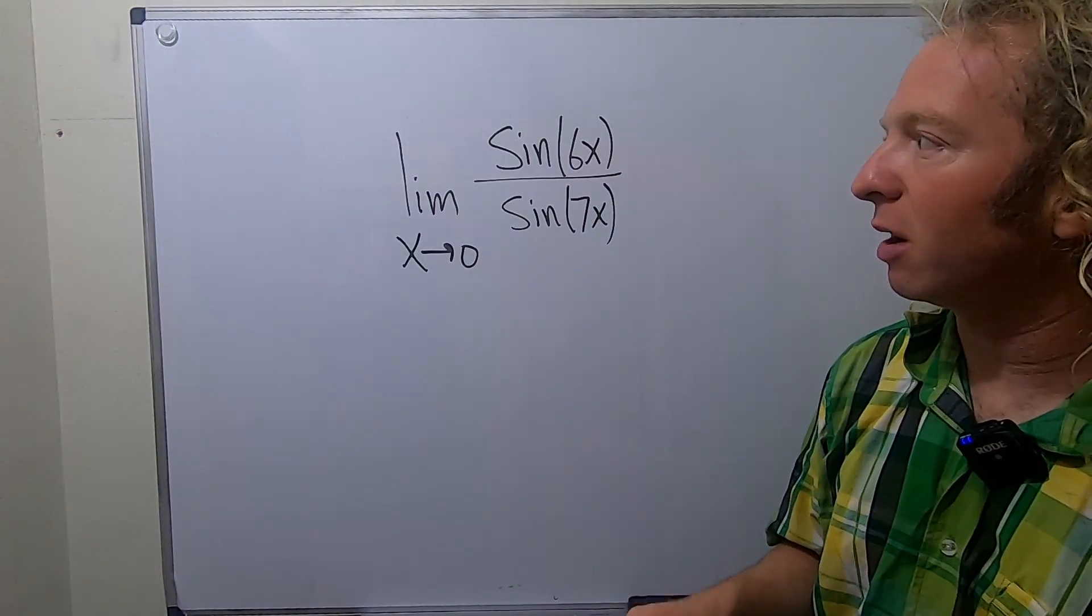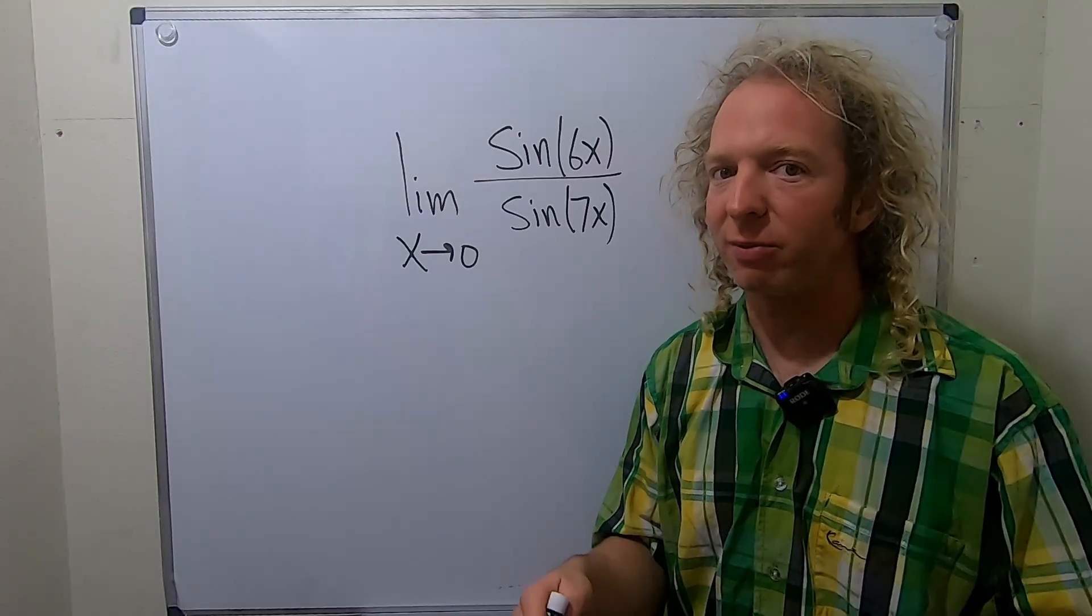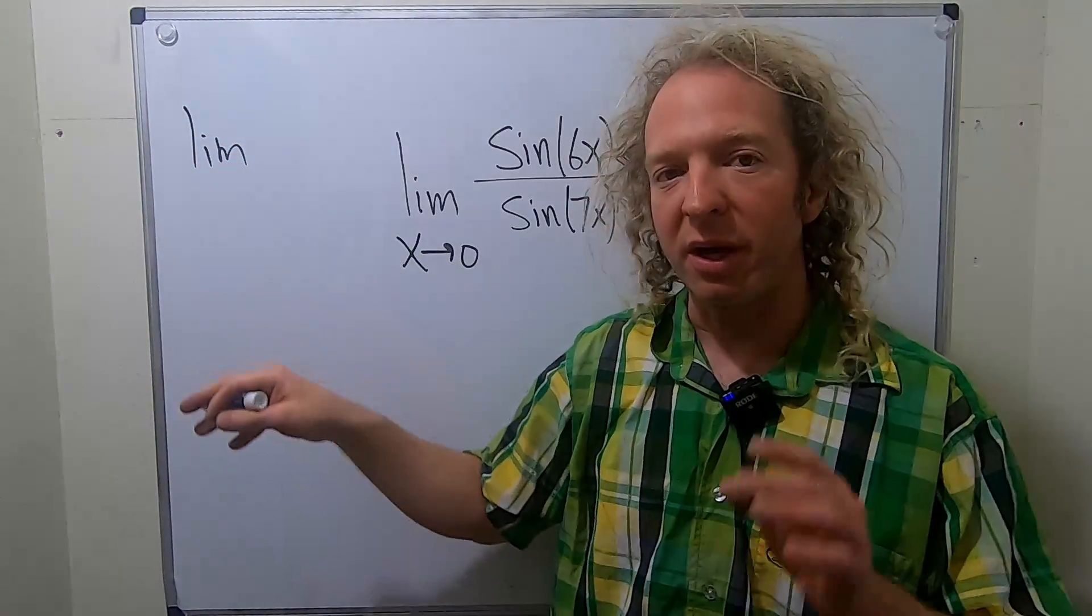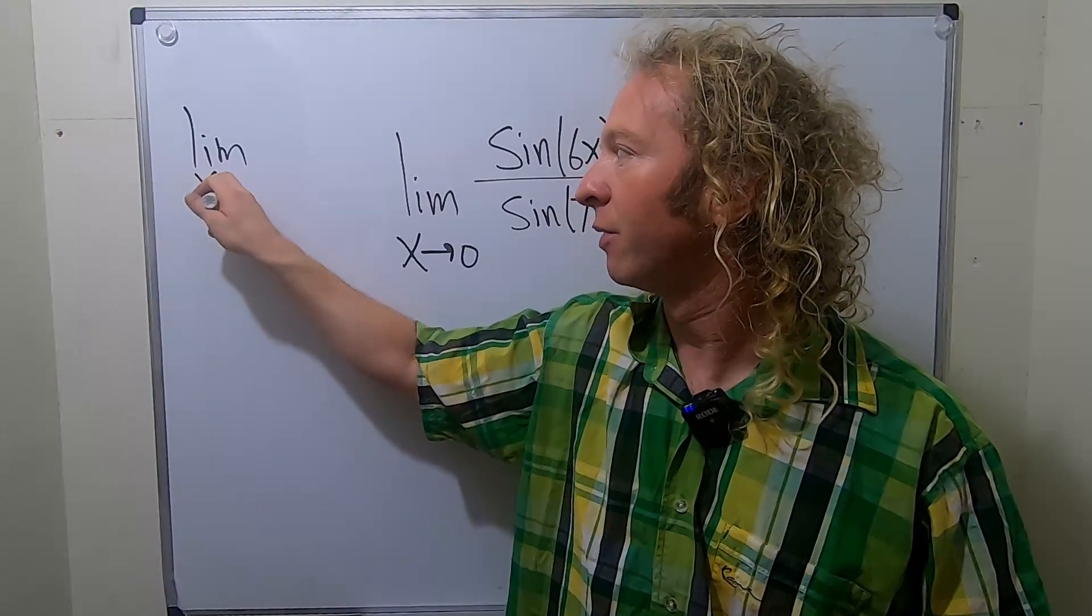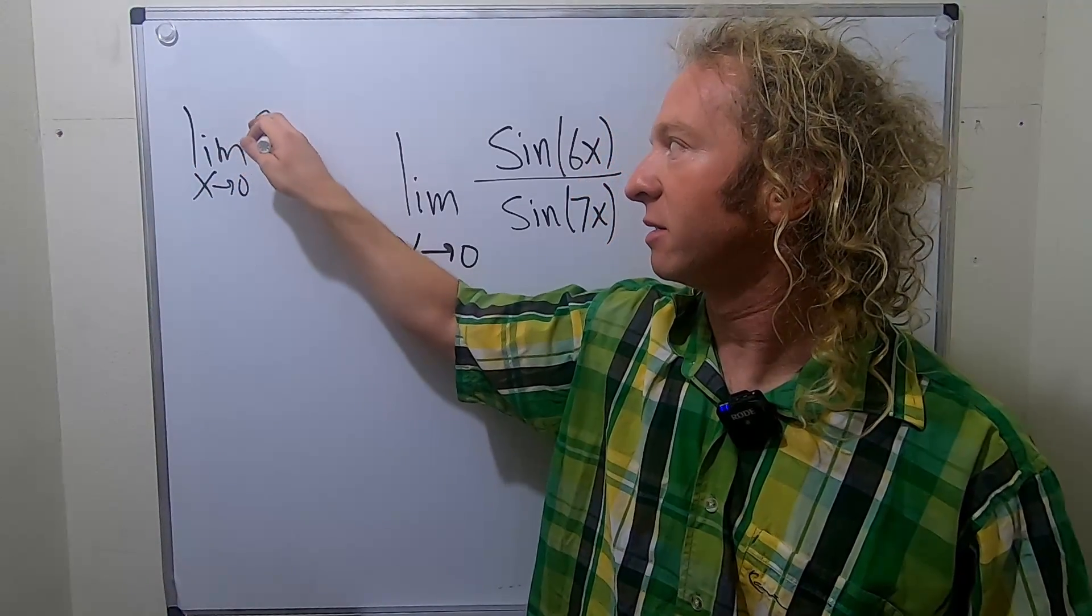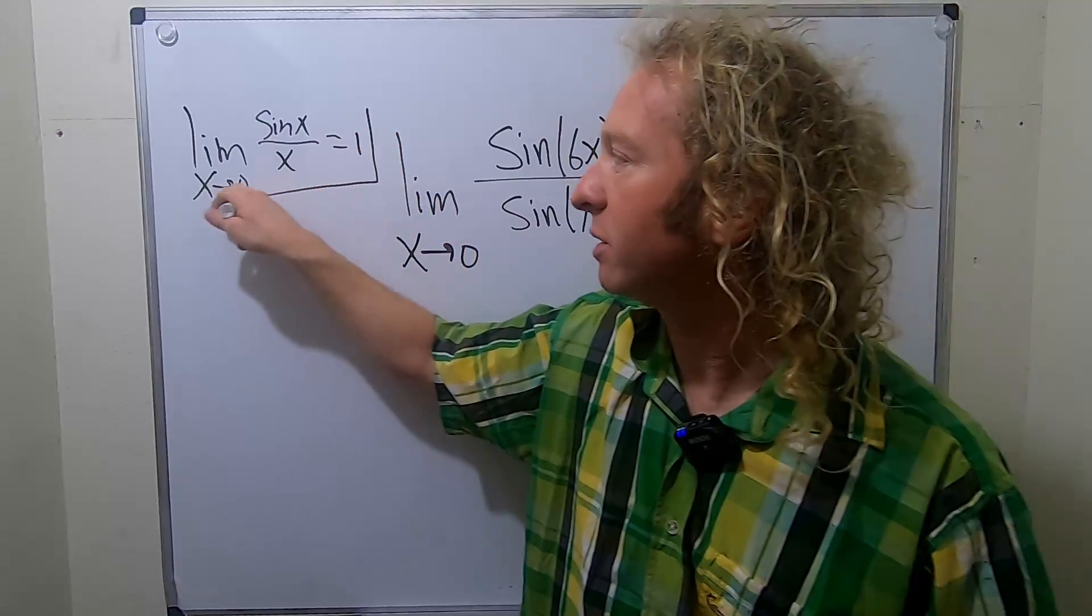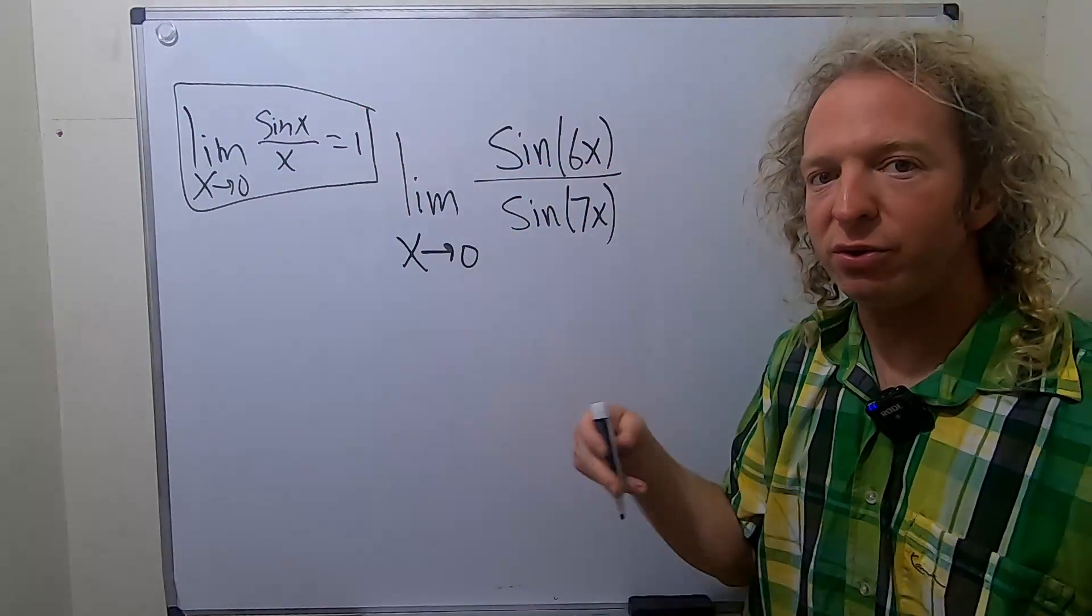So to do this problem, we need to use a fact from calculus. We need to use the fact that the limit as x approaches zero of sine x over x is equal to 1. So we're going to use this limit in order to compute this one.